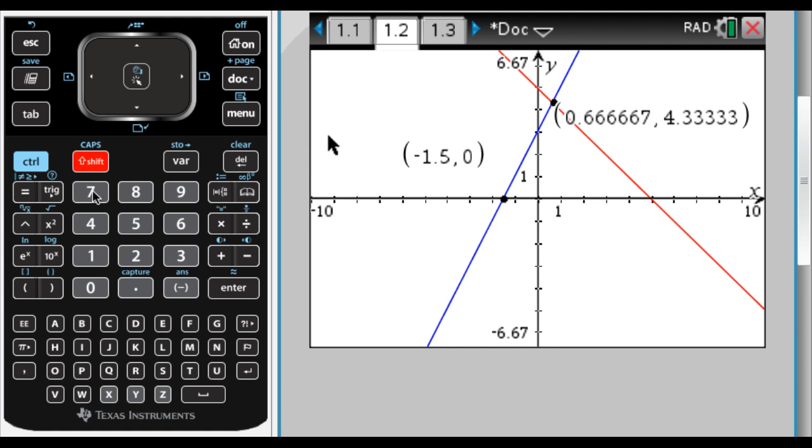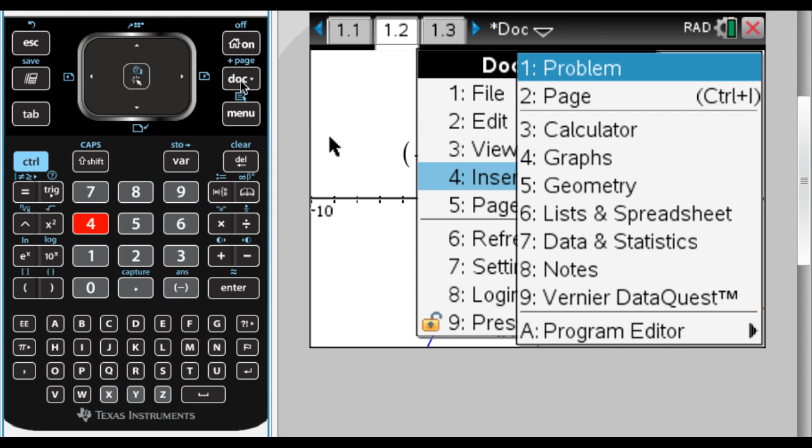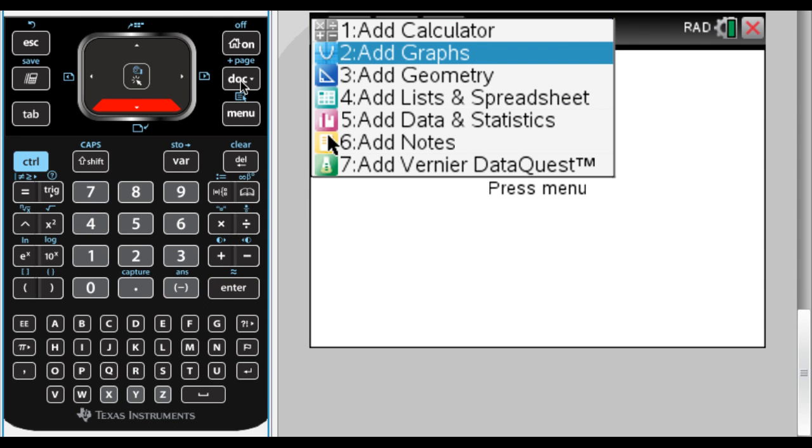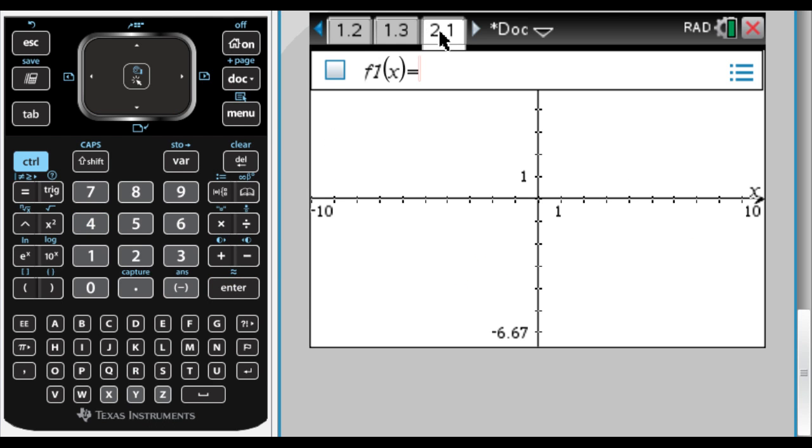Something that I'm going to do right now is I'm going to press doc 4, so that's insert again. This is where I inserted the graphing pages before. What I'm going to do this time though is I'm going to press 1, I'm inserting a new problem, and in this problem I want to add a graph. Now if you look at your tabs, there's 1.1, 1.2, 1.3, and now there's 2.1.